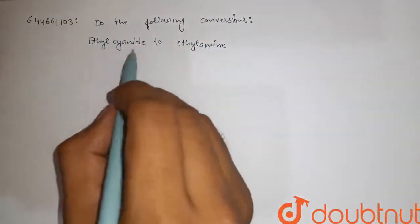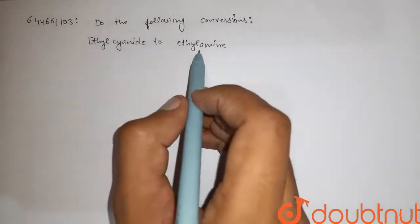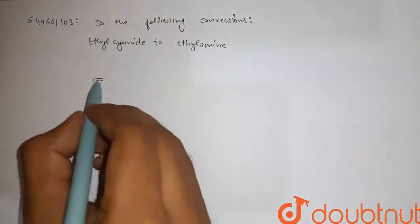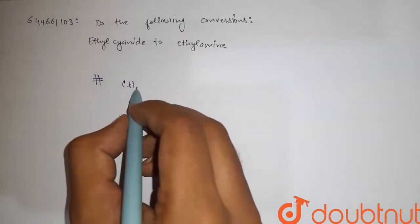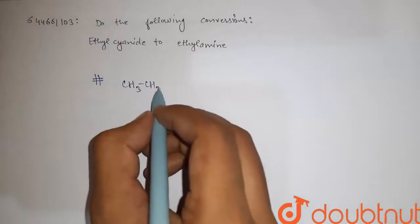Do the following conversion: ethyl cyanide to ethylamine. Let's start with ethyl cyanide, that is CH3-CH2-CN.